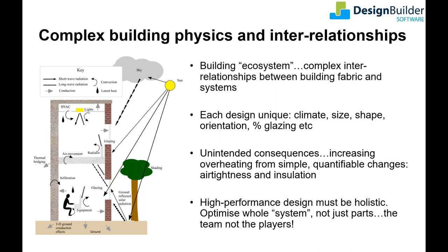By changing just one design element — which we'll refer to as design variables — we create all these chain reactions. This means trying to fully understand how to optimize a building design gets very complex very quickly. You'll have seen unintended consequences resulting from this complexity, such as summer overheating caused by well-intended energy conservation measures. To design high performing, energy efficient, and comfortable buildings, we need to consider the building ecosystem including its surroundings much more holistically — not just its component parts, but how each interacts with the others. There's a strong similarity here to sports team performance: you can have the best individual players but if they don't work well together it will not be a high performing team.